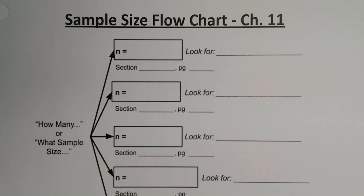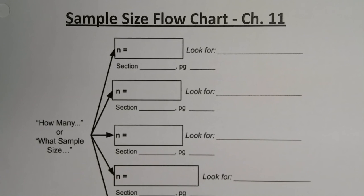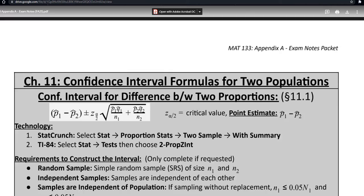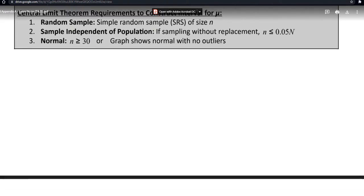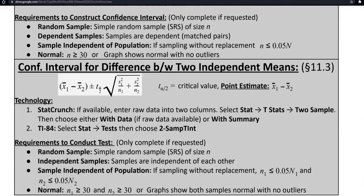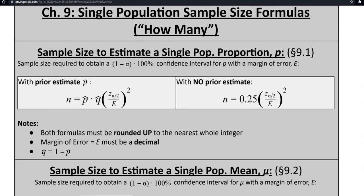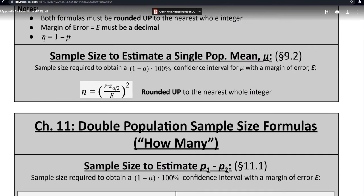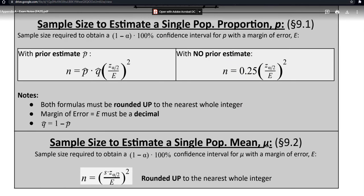Our next flowchart won't be nearly as dense as the confidence interval one — that's a really full page. So this one we want to look at our sample size options. For that we have five separate choices to make; there are five different sample size formulas we have learned. Let me go grab them out of the appendix. That's the confidence intervals — two pages of those — and then right here is sample size: chapter 9 sample size and chapter 11 sample size.